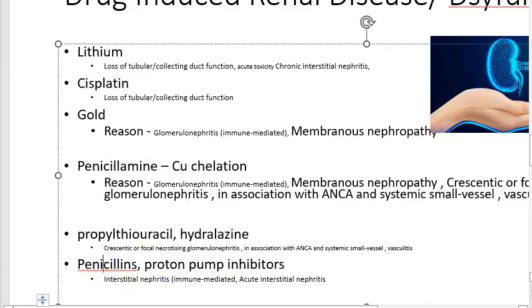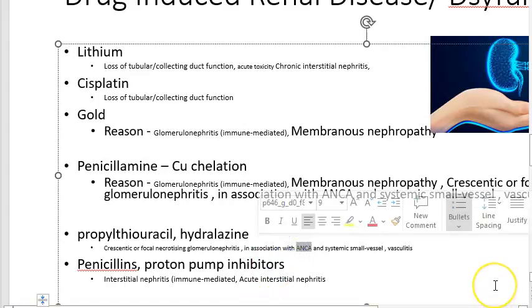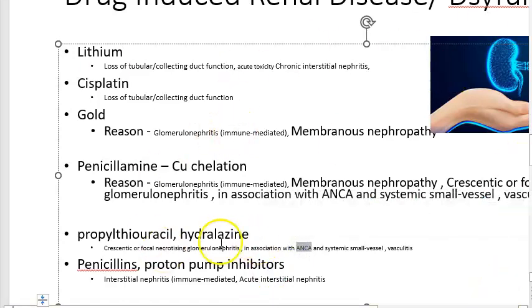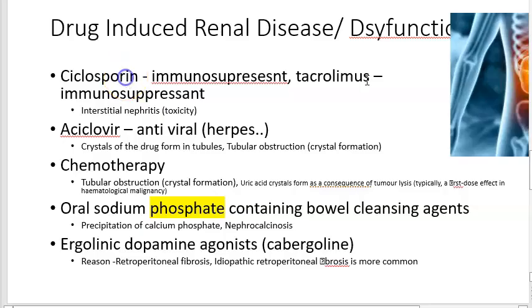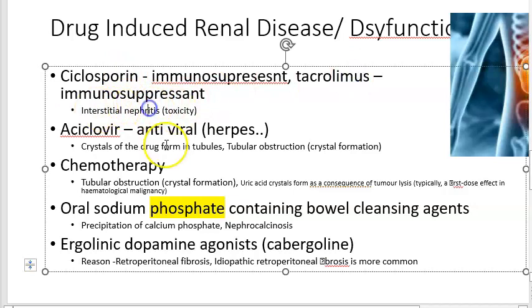There is something called ANCA — anti-neutrophil cytoplasmic antibody. Propylthiouracil, the antithyroid drug, and hydralazine, used for hypertension, both cause glomerulonephritis and vasculitis related to ANCA. Penicillin and proton pump inhibitors also cause nephritis. Cyclosporine and tacrolimus, both immunosuppressants, also cause nephritis. Acyclovir, the antiviral, causes crystal formation in the kidney tubules. Chemotherapy leading to tumor lysis causes uric acid crystals in the kidney.